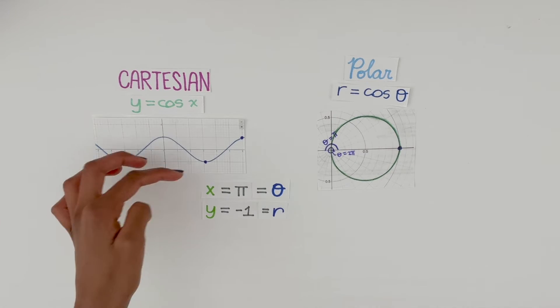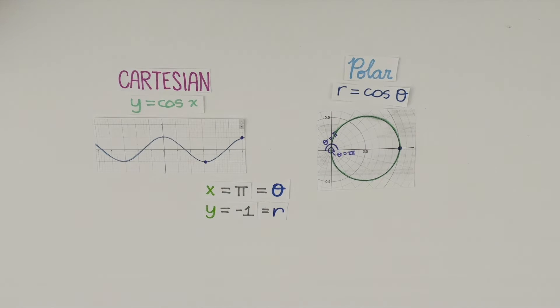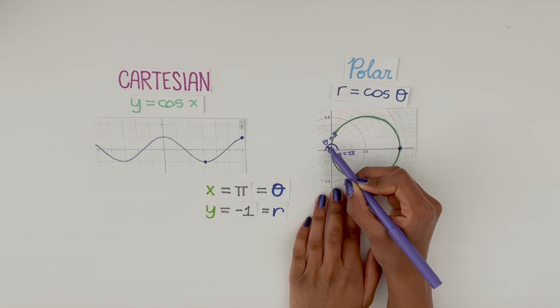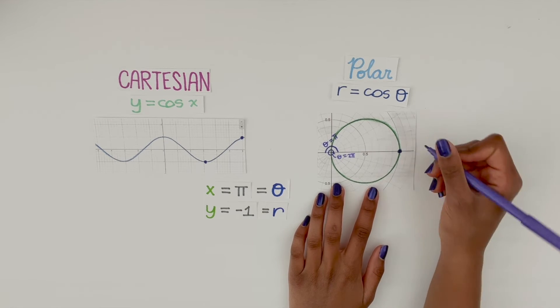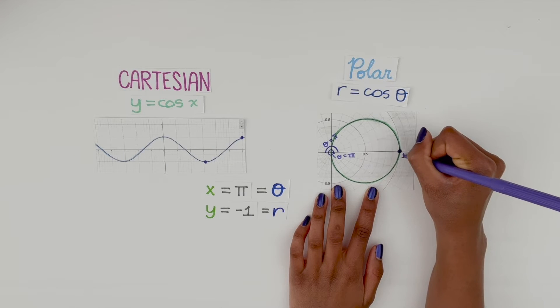But how do we represent the negative on our polar graph? Well, it's simple. The negative causes the point to go in the opposite direction. So it's essentially going to be at the same point as when theta was equal to 2π.